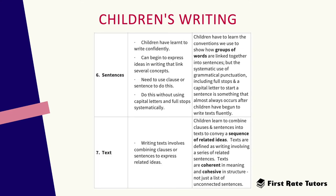The next stage relates to sentences. Children have learnt to write confidently and can begin to express some ideas in writing that link several concepts together in sentences. They also need to learn how to use clauses and sentences to do this, and can then use capital letters and full stops systematically. Children have to learn the conventions used to show how groups of words are linked together in sentences. The systematic use of grammatical punctuation, including full stops and a capital letter to start a sentence, almost always occurs after a child has begun to write text fluently.